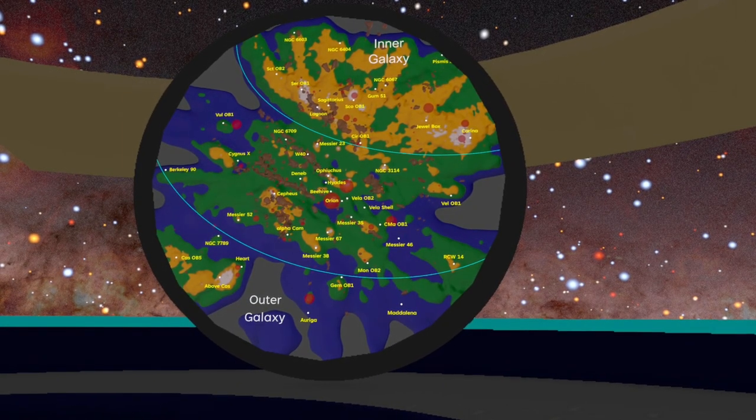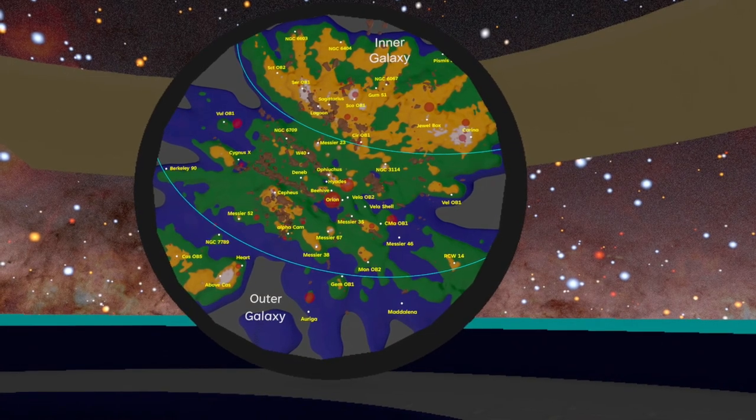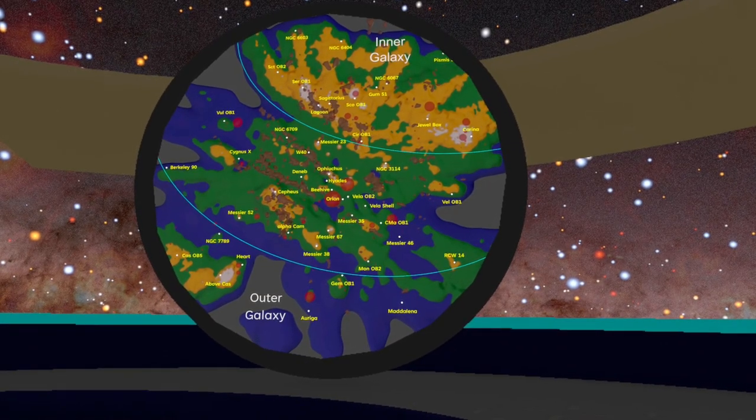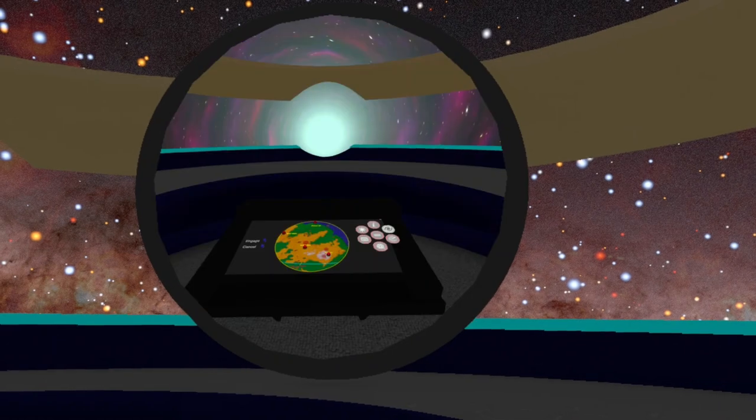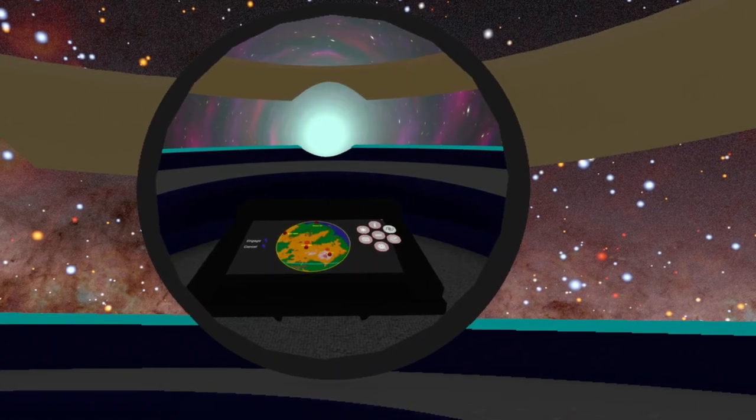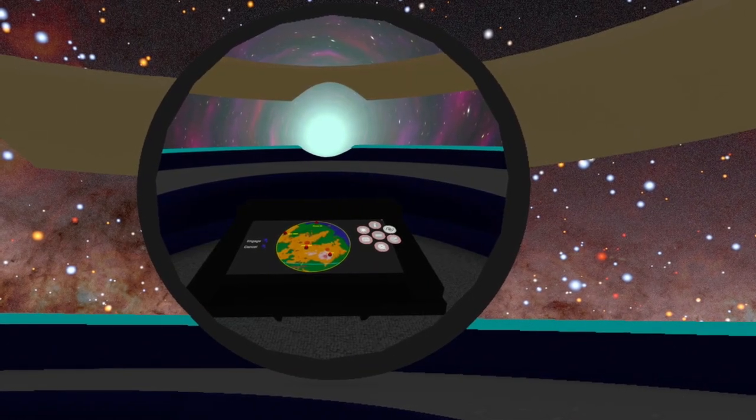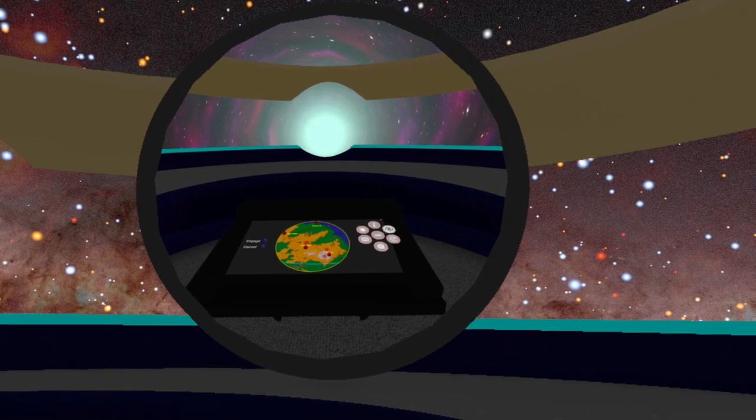The galaxy navigation console lets you select a location and use a wormhole to jump there. Once there, you can select from several different sky and top-down maps of the region.